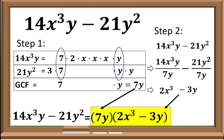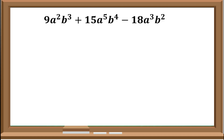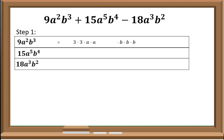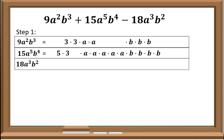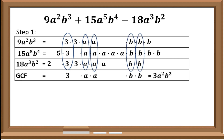Now let us try this one: 9a squared b cubed plus 15a raised to 5 b raised to 4, minus 18a cubed b squared. For step 1, for 9a squared b cubed, we have 3 times 3 times a times a times b times b times b. For 15a raised to 5 b raised to 4, we have 5 times 3 times a times a times a times a times a times b times b times b times b. For 18a cubed b squared, we have 2 times 3 times 3 times a times a times a times b times b. The common factors are 3, a squared, and b squared, so the GCF is 3a squared b squared.